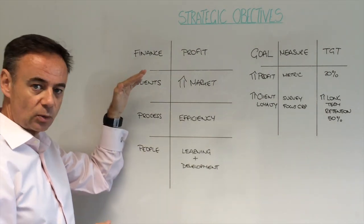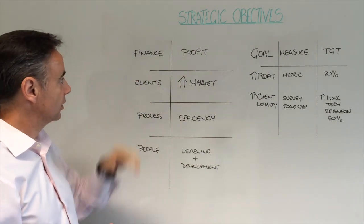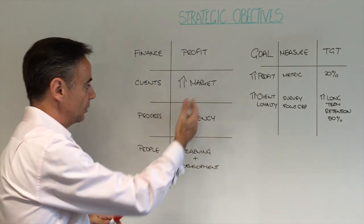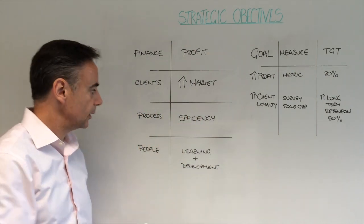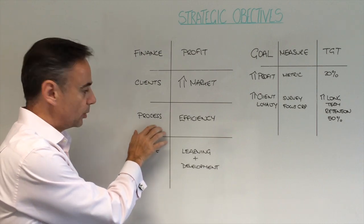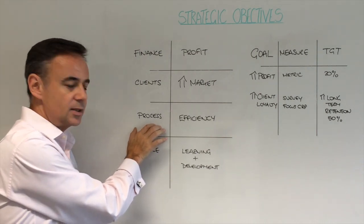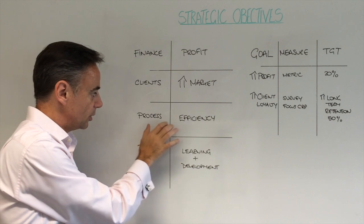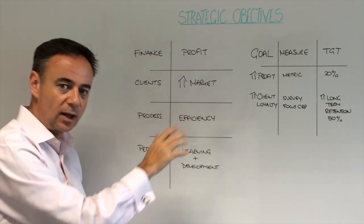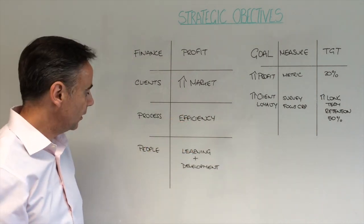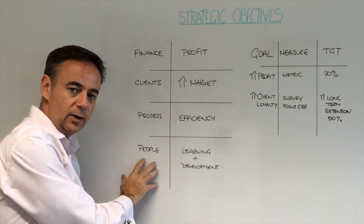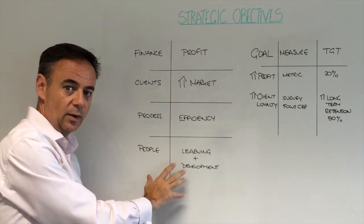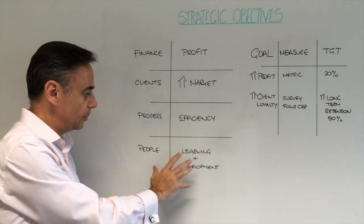They looked at the financials — what was going on at that level — clients and customers, which is all about the market and market share. Looking at internal processes — not to be confused with operations — but the actual processes and how efficient and streamlined they are. And looking at people: people growth, and the learning and development going on in the business.